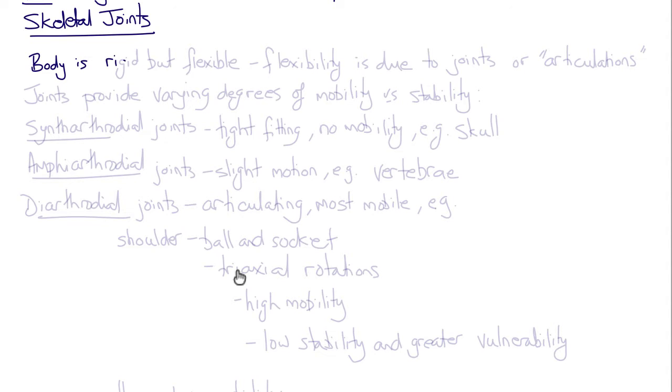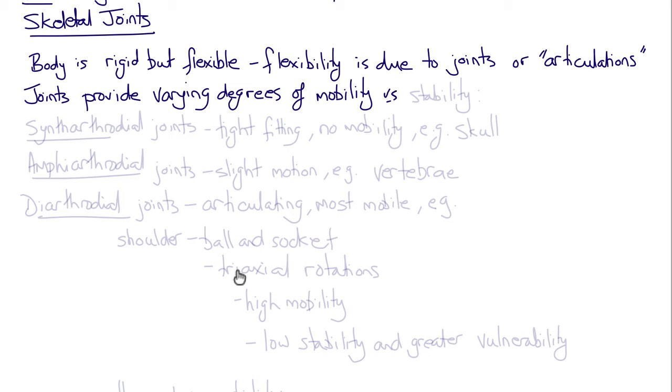So many problems involve the musculoskeletal system and skeletal joints. The body is rigid but flexible, and the flexibility is due to our joints or articulations. Joints provide varying degrees of mobility versus stability.